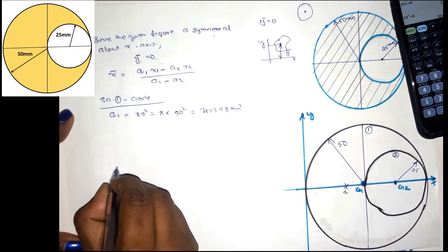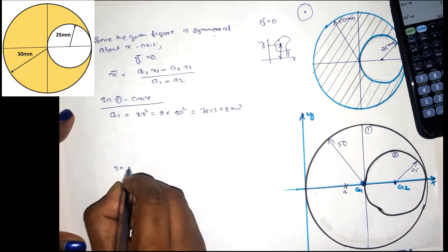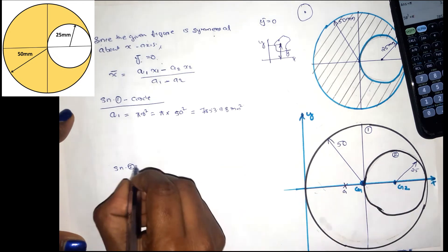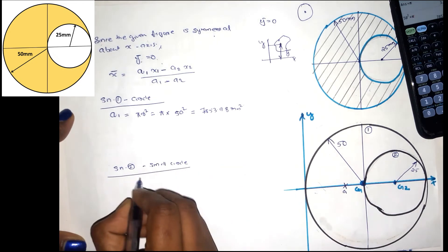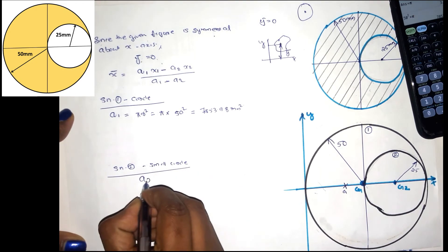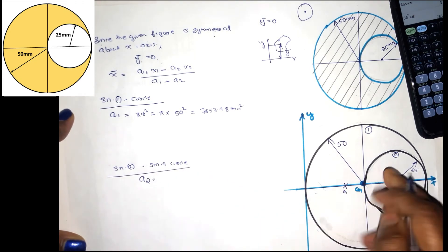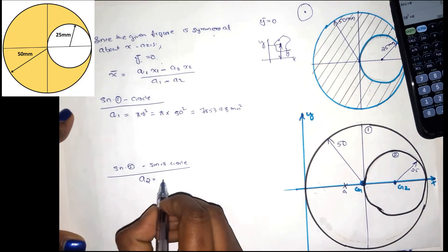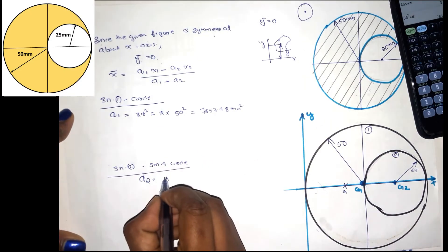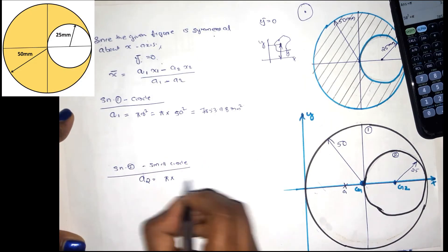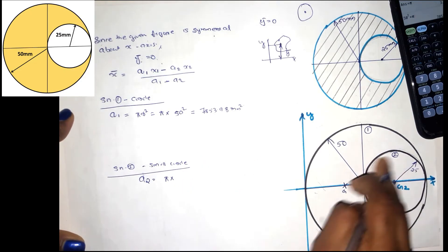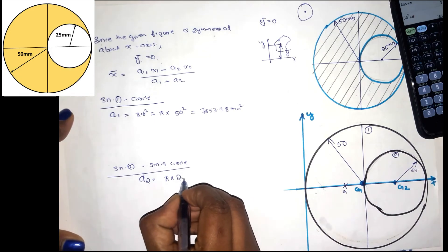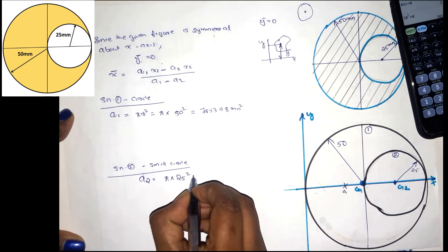Next, we have section 2 — section 2 is the small circle. The area A2 is also π·r², with the small circle radius equal to 25, so A2 = π × 25².